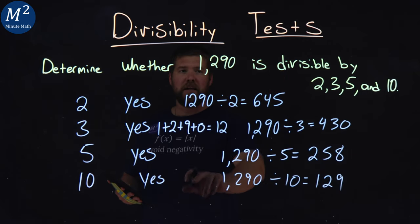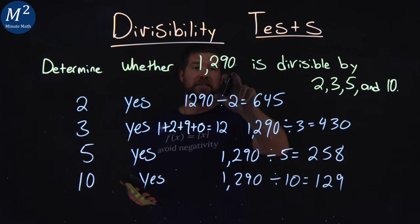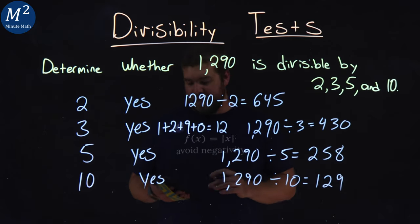So if it's equal to 10 or larger than 10 and ends in 0, then it's divisible by 10.